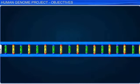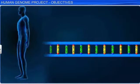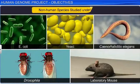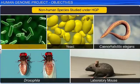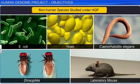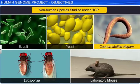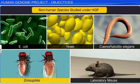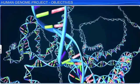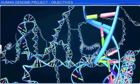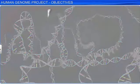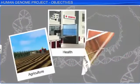Although the HGP aimed to understand the genetic makeup of the human species, it also focused on several other non-human species, such as the bacterium E. coli, yeast, a free-living non-pathogenic nematode called Caenorhabditis elegans, a fruit fly called Drosophila, and the laboratory mouse. Learning about non-human DNA sequences can lead to a further understanding of their natural capacities and traits, which may offer solutions in various sectors such as health, agriculture, and energy production.